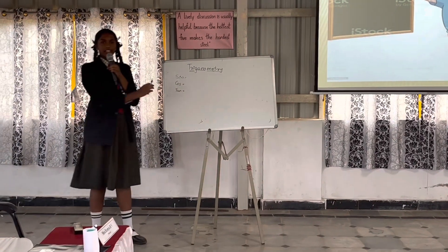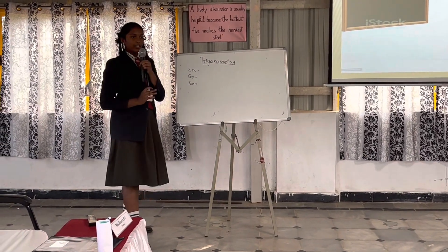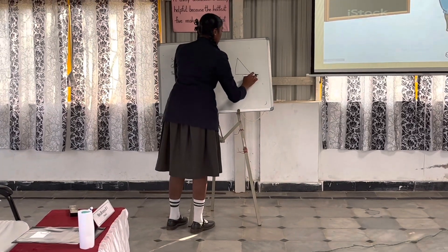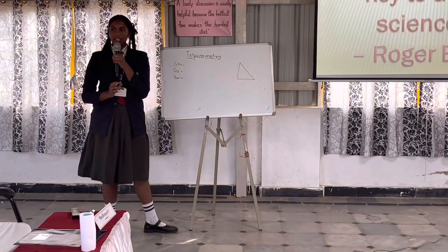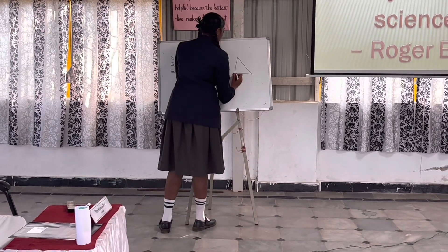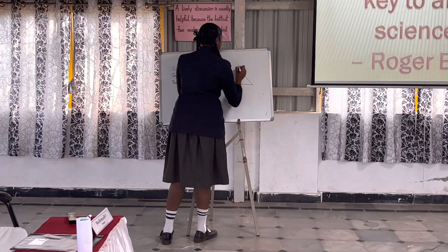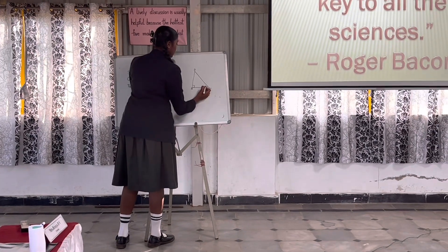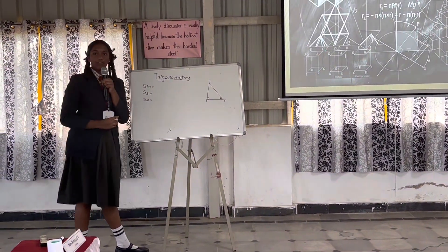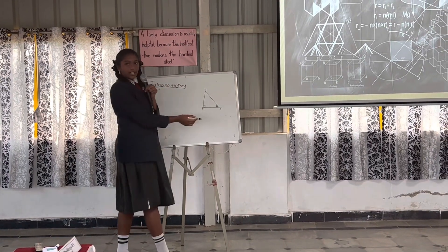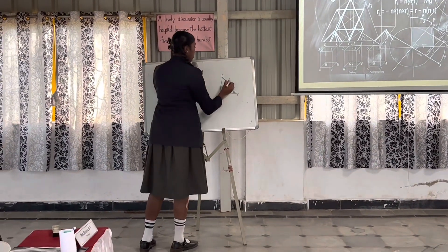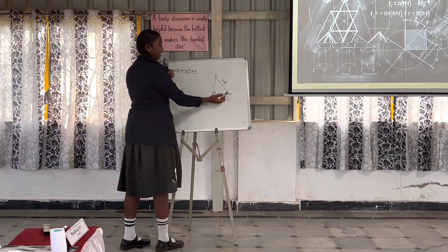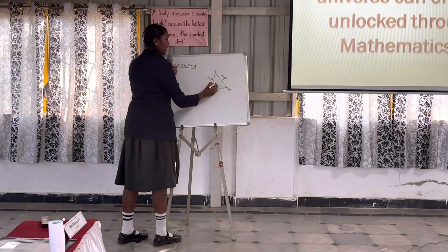There are 6 trigonometric ratios, but we will consider 2 to 3 at first. When you consider a right-angle triangle — a triangle with one angle of 90 degrees — the longest side is the hypotenuse. When you consider a particular angle, the side opposite to it is called opposite, and the side below it is called adjacent.